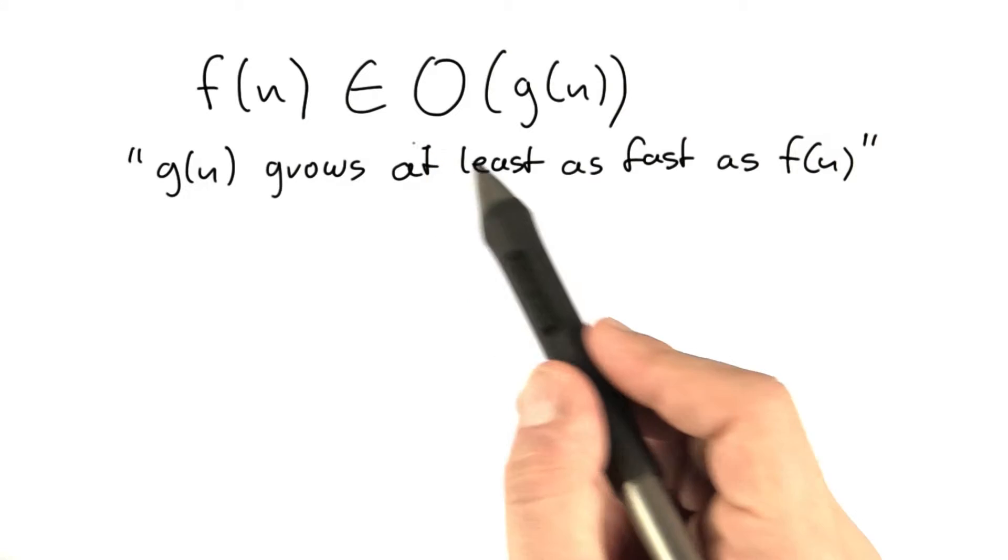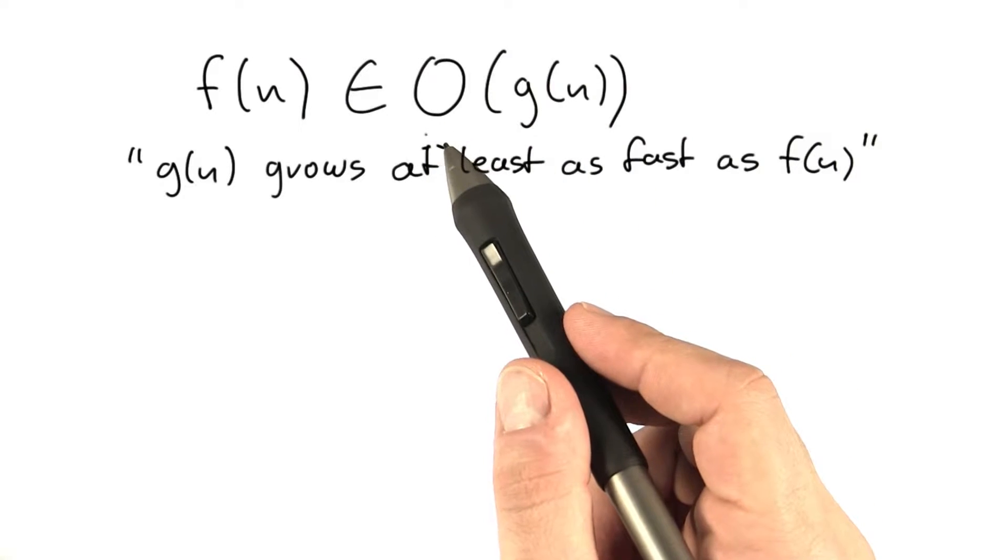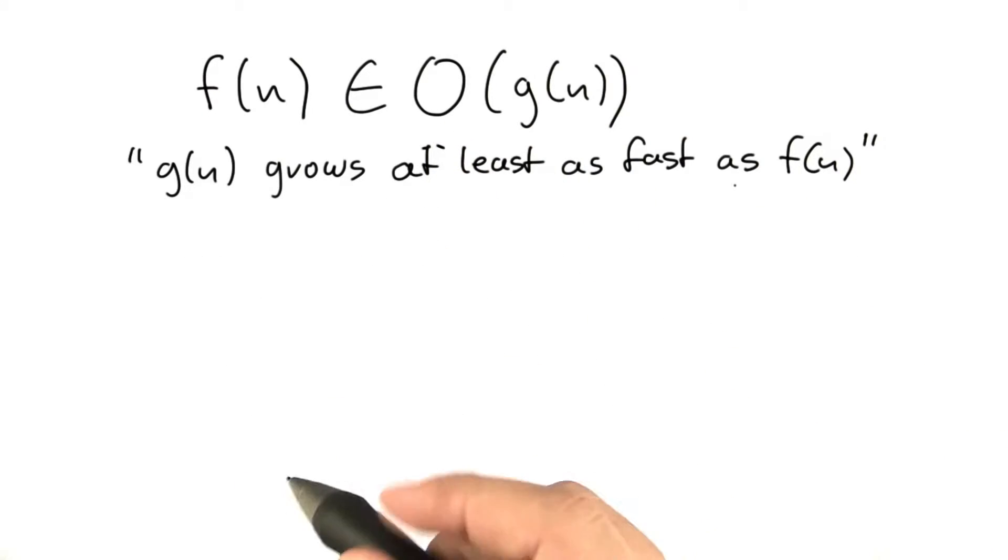Now this might sound a little more complicated than it actually is, so let's do some examples to see how functions outgrow each other.